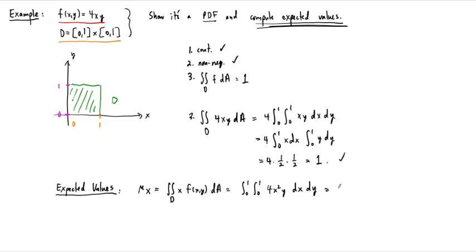And again, this is separable. So this is 4 times the integral from 0 to 1 x squared dx times the integral from 0 to 1 y dy. These are polynomials. This one becomes 1 third, this is 1 half. So we end up with 4 times 1 third times 1 half. Working all this out, the 2 cancels the 4, we end up with 2 thirds. So this is mu sub x.